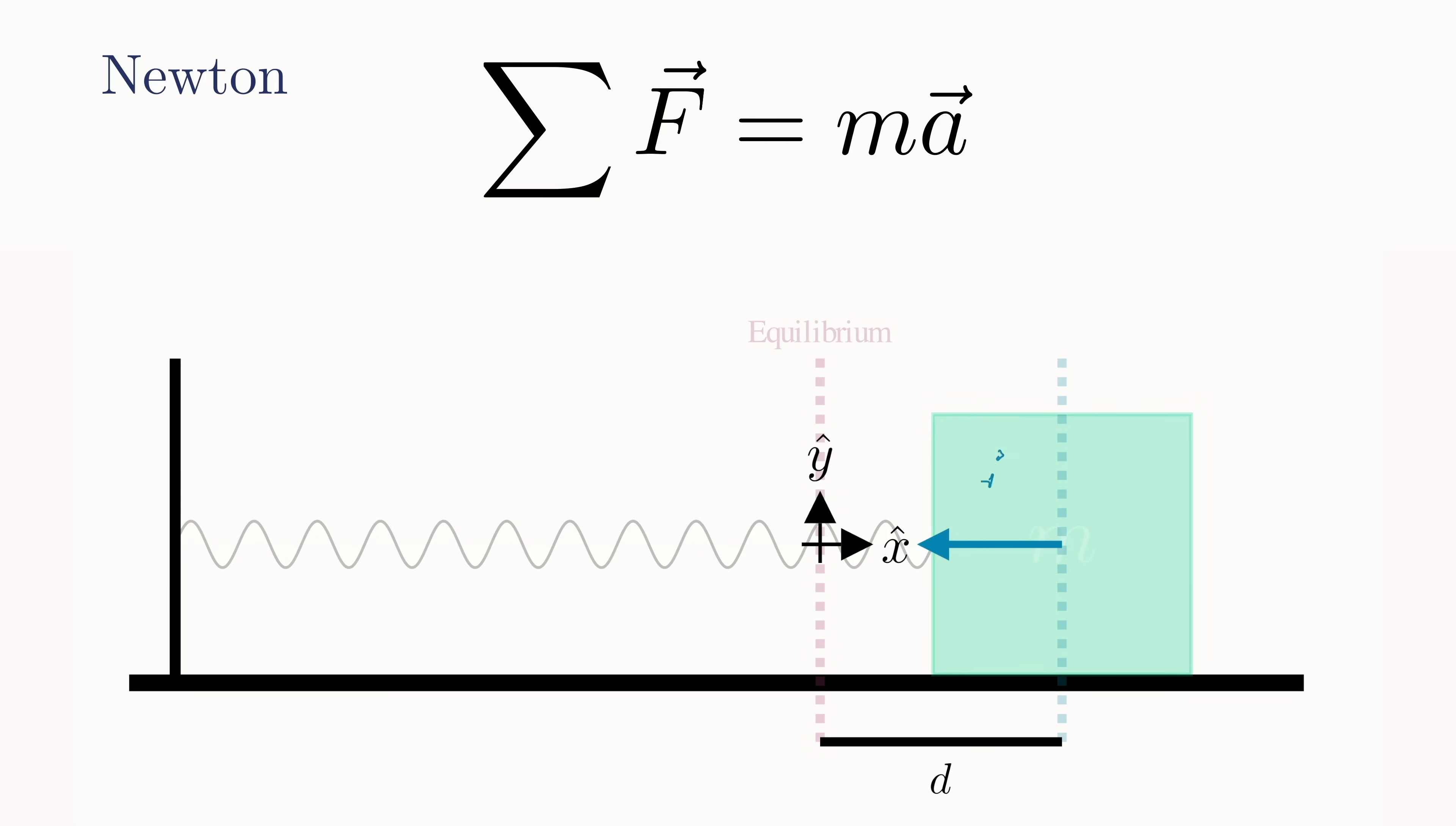The force is given by Hooke's law, which says that it must equal negative kx, where k is the so-called spring constant. This just means it's some constant value that will depend on the geometry and material of the specific spring you are using. So the further we pull it out, the stronger the force is.